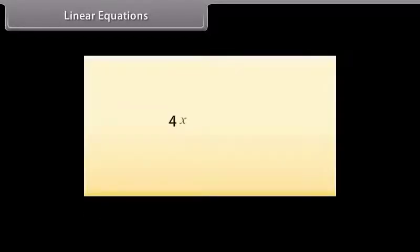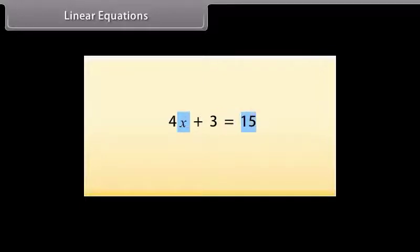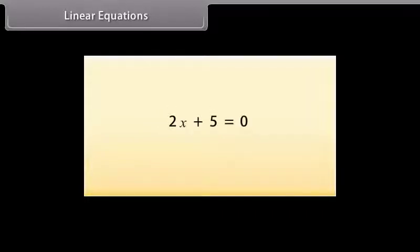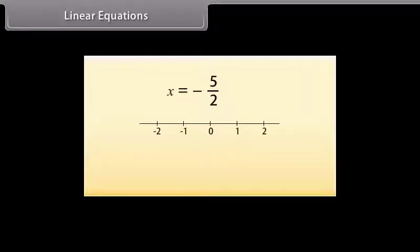We know that a simple linear equation is an equality between two algebraic expressions involving an unknown value called the variable. The two sides of an equation are called right-hand side or RHS and left-hand side or LHS. Consider this equation. The solution or the root of this equation is minus 5 by 2. Let's see where it represents on the number line. Here it is.